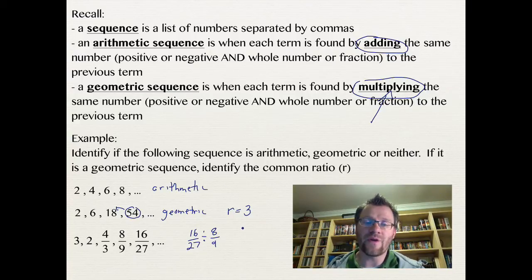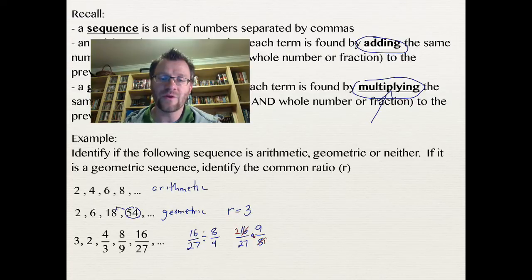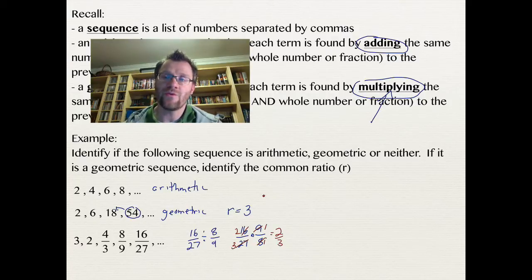Now, remember that when you're dividing with fractions, you actually end up multiplying. And then I always suggest to simplify before you do anything, before you multiply these together. So 16 and 8 simplify. 8 goes into 8 once, it goes into 16 twice. And 9 and 27, 9 goes into 9 once, and into 27 three times. So that means we're saying that our common ratio is 2 thirds.